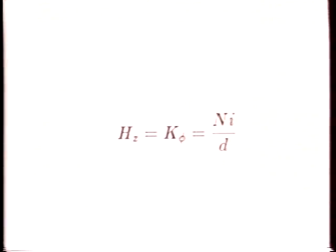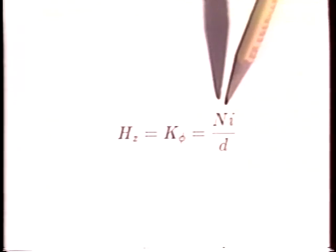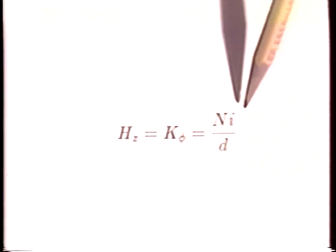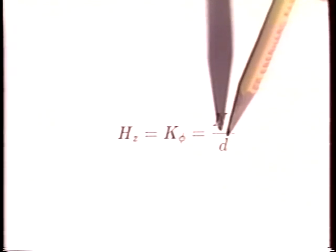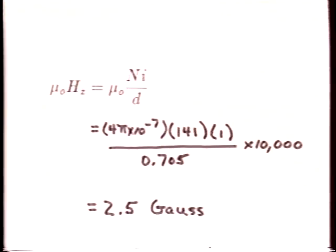The infinitely long solenoid can be regarded as the analog for MQS systems of the EQS plane parallel plate capacitor. Well away from the ends, the axial field just inside the coil should be equal to the surface current density. The surface current density is the number of turns times the current per turn divided by the length d. The probe measures the flux density mu-naught H. To convert from SI units Tesla to Gauss, we multiply by 10,000.